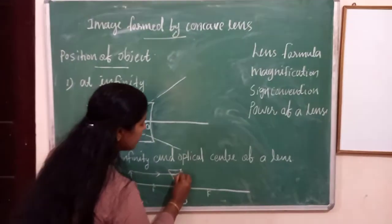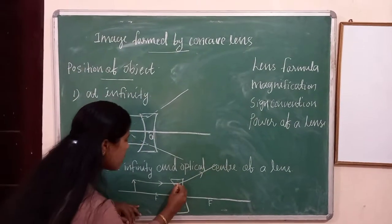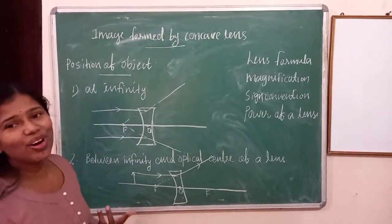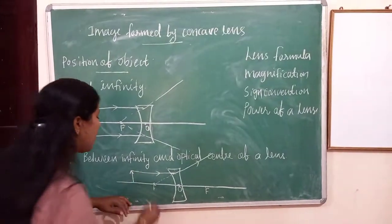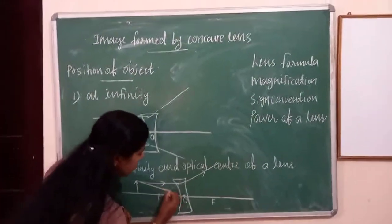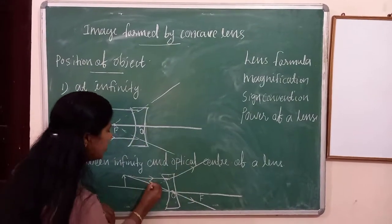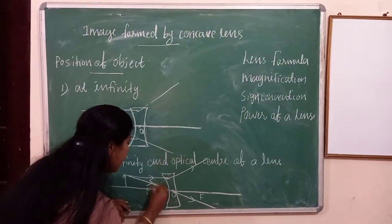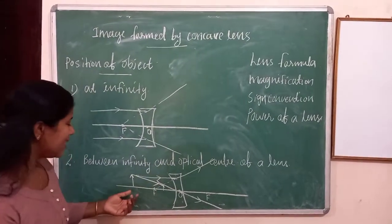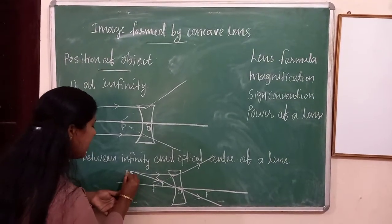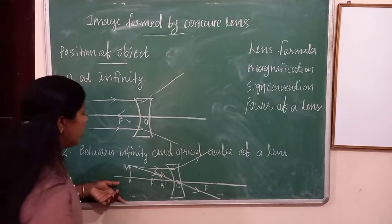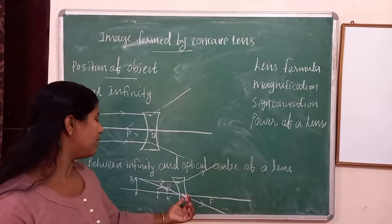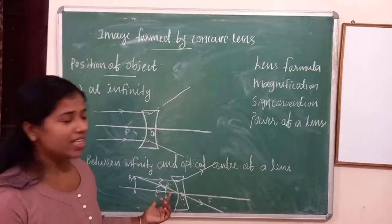Then it will go like this. It appears to come from this focus. Then the third ray we apply: the ray of light passing through the optical center goes straight. Then where will we get the image? These two lines coincide on this side — here we will get the image. This is object AB, this is image A'B'. Object between infinity and optical center — image we will get between O and F. This is the second case.